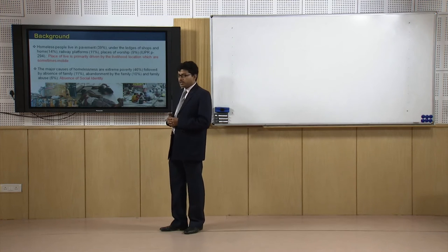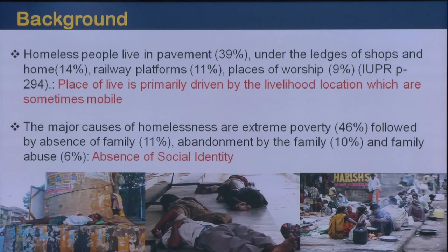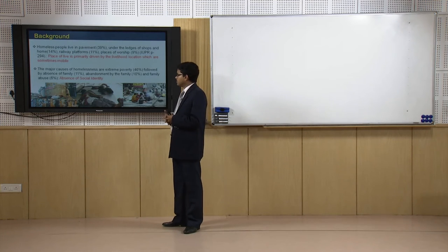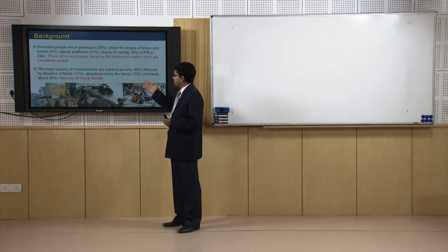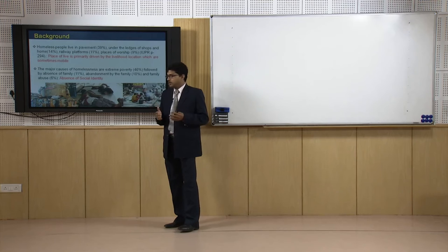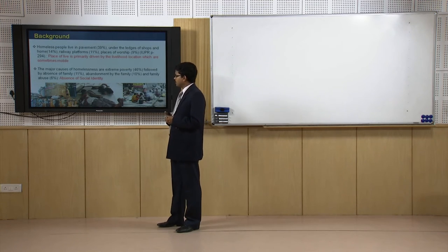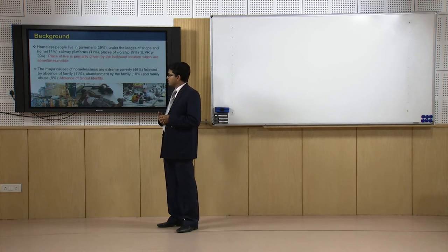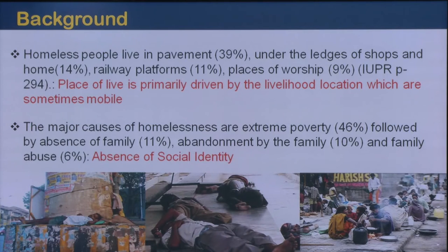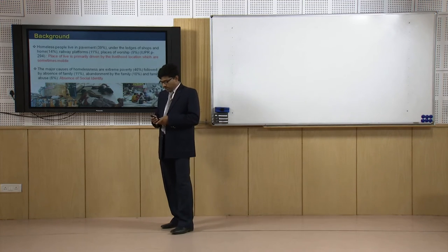Now let us see the major causes of homelessness. The major cause is extreme poverty, which accounts for 46 percent, followed by the absence of family — because they do not have family backup and support, sometimes they become individuals without shelter. About 10 percent are abandoned by family, maybe in rural areas or small towns, because of disease or other reasons, and they come to the city and stay like this. Also, family abuse and family conflicts sometimes force them to come out from the family and stay in an inferior situation. The absence of social identity is the keyword here — they do not have any family or social belongingness, and they live as an individual or mobile person.